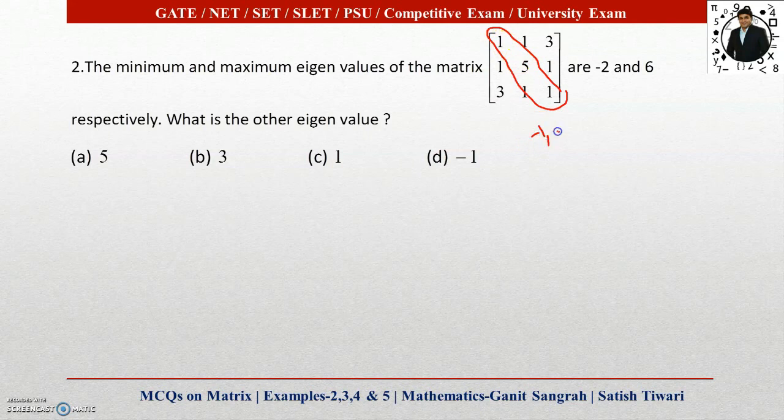So we can write λ₁ + λ₂ + λ₃ = 1 + 5 + 1 = 7. We have λ₁ and λ₂ as -2 and 6, and λ₃ is unknown. This gives us -2 + 6 + λ₃ = 7, which simplifies to 4 + λ₃ = 7. So the value of λ₃ is 3. This is the third eigenvalue.